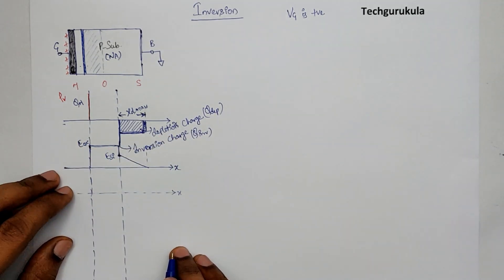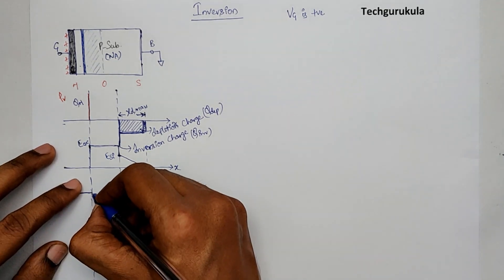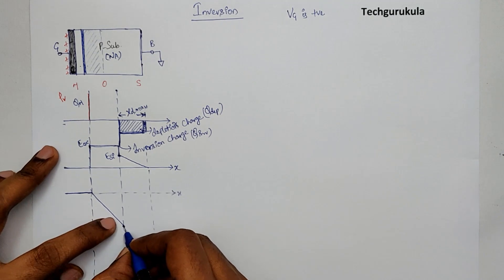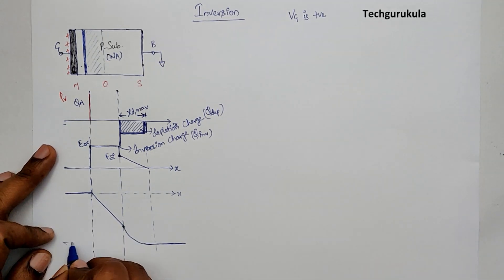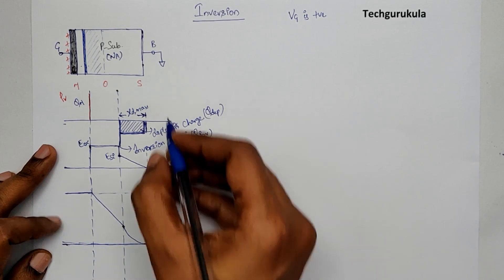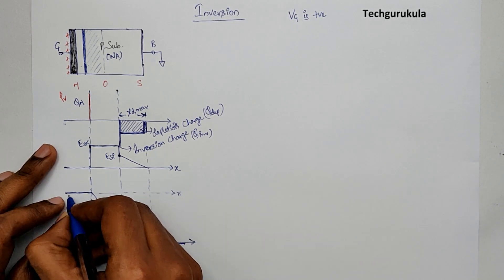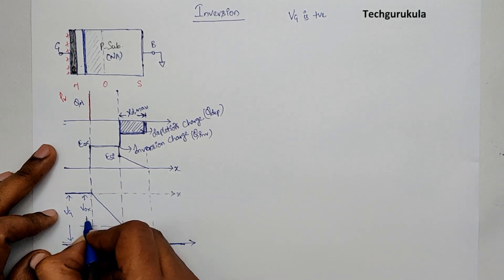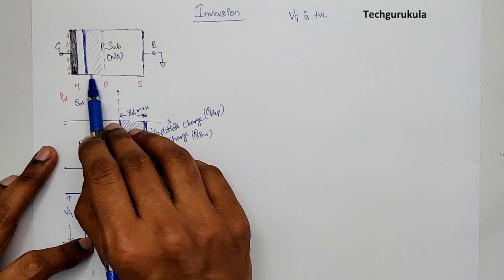We have already seen how to calculate these values in depletion mode. Looking at the electric field to potential relationship, it will be linear. The potential across the oxide will be higher compared to the depletion case, and the potential drop across the semiconductor will also increase. Assuming the bulk is grounded, this potential should be zero, meaning the total difference equals Vg. This gives us V_ox as the potential drop across the oxide, and the surface potential as the potential drop in the semiconductor.